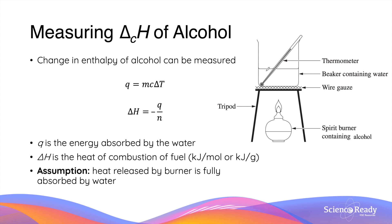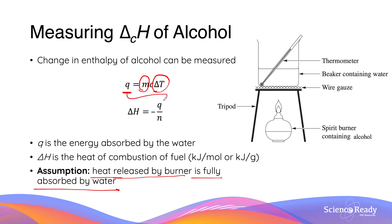In this experiment, we make a key assumption: that the heat released by the combustion of alcohol is fully absorbed by the water — that is, there is no heat loss. If we measure the change in temperature of the water along with its known mass, we can calculate the heat absorbed, and by dividing by the number of moles of alcohol used, we can calculate the enthalpy change of combustion.